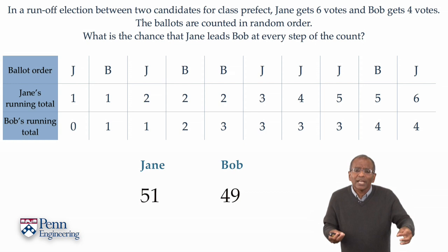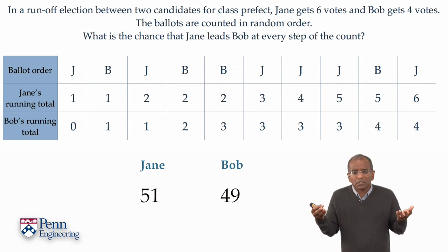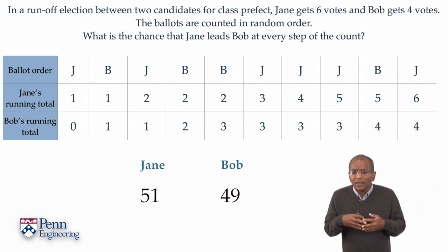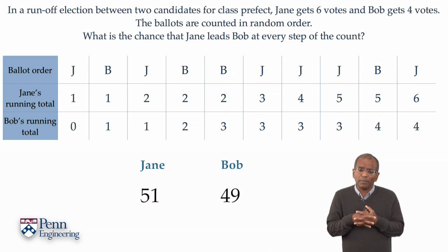If it is 51 to 49, then every vote is essentially a coin flip — there is almost just a one in two chance that a given vote goes to Jane or Bob. In such a setting, one might expect frequent lead changes, but that eventually Jane gets her nose ahead and wins. If you were to put a numerical estimate of the chance that Jane actually leads at every step, what do you think it might be? Think about it for a minute — we will do the formal analysis in a moment, but what does instinct tell you?